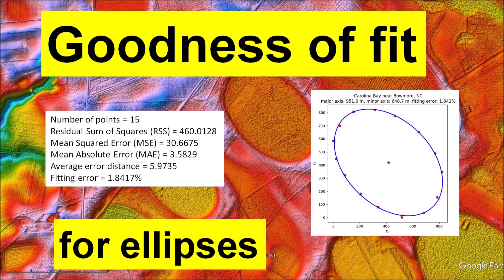Welcome to another presentation about the Carolina Bays. This video introduces a goodness of fit measure for ellipses that is independent of the number of sample points and that is scaled to the size of the ellipse to allow comparison of the fitting errors for ellipses of different sizes.